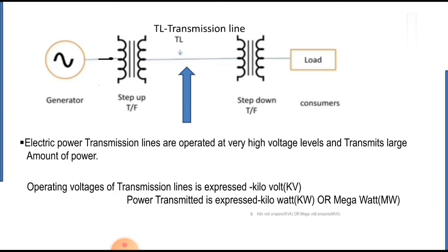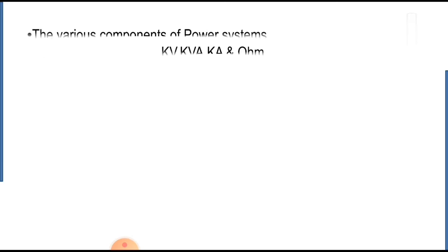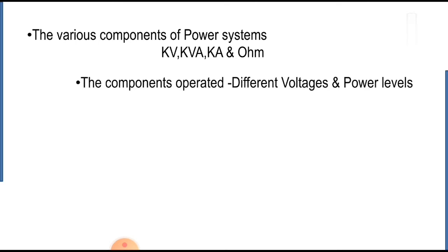The various components of power systems like alternators, motors, transformers, etc. have their voltage, power, current, and impedance ratings in kV, kVA, kA, and ohms respectively. The components or various sections of power systems may operate at different voltage and power levels. This is an important point.